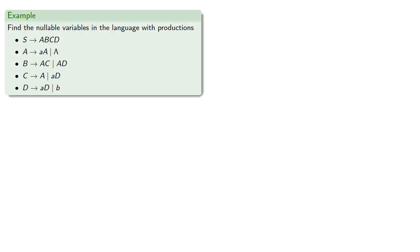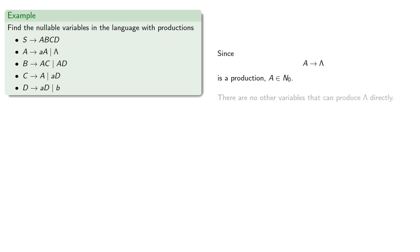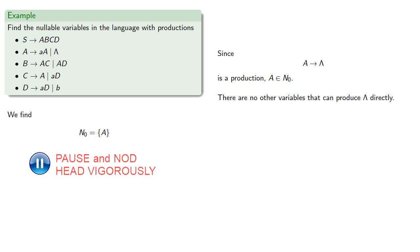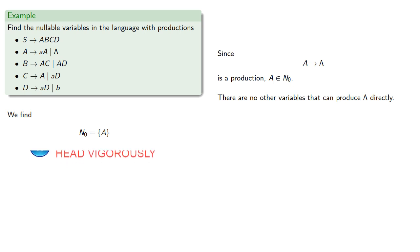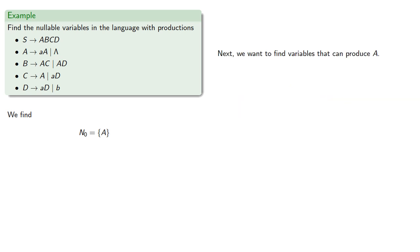Let's find the nullable variables in the language with the given production rules. Since A produces lambda, A is in our initial set N0. There are no other variables that can produce lambda directly, so N0 is just {A}. Next, we want to find variables that can produce A. We have C produces A, so C is in N1.